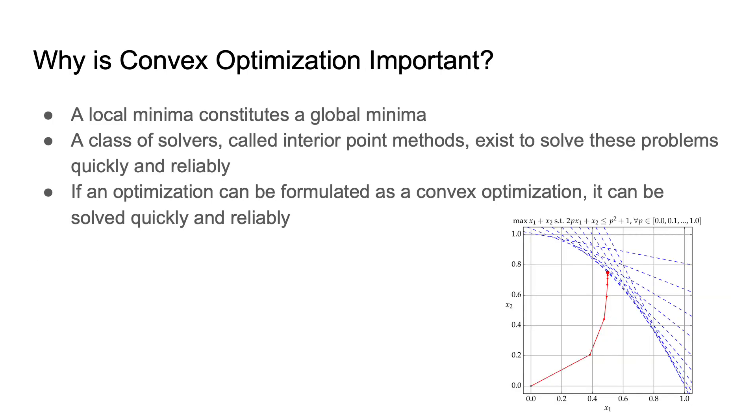Convex functions have a few nice properties. Firstly, a local minimum constitutes a global minimum. This is nice, because if you find a local minimum, you know you've found the optimal value for your problem, and most algorithms are good at finding a local minimum. Secondly, there exists a class of optimization solvers called interior point methods that can solve convex optimization problems very quickly. So if a rocket landing problem were convex, it could be solved very quickly and reliably in real time.